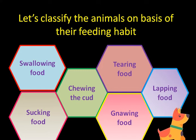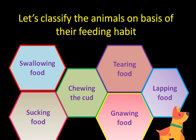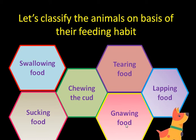On the basis of their feeding habits, let's classify them one more time. There are six categories: swallowing food — animals like frog, lizard, snake; sucking food — like mosquito, butterfly and leech; chewing the cud — like cow, camel, buffalo; tearing food — like lion, tiger, dog; gnawing food — like rabbit, squirrel, rat; and lapping food — like cat and dog. These are a few of the ways by which animals eat their food.